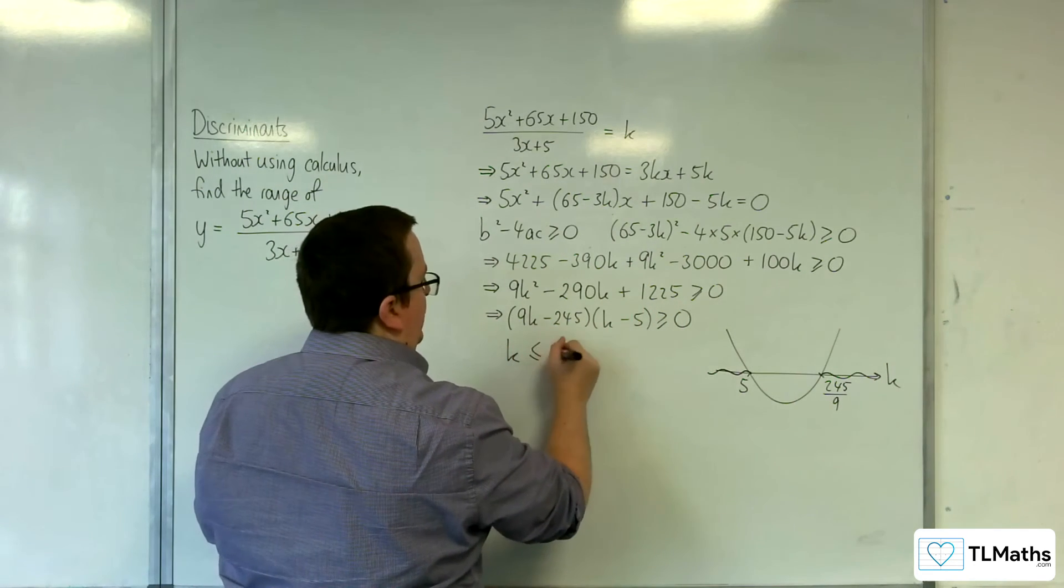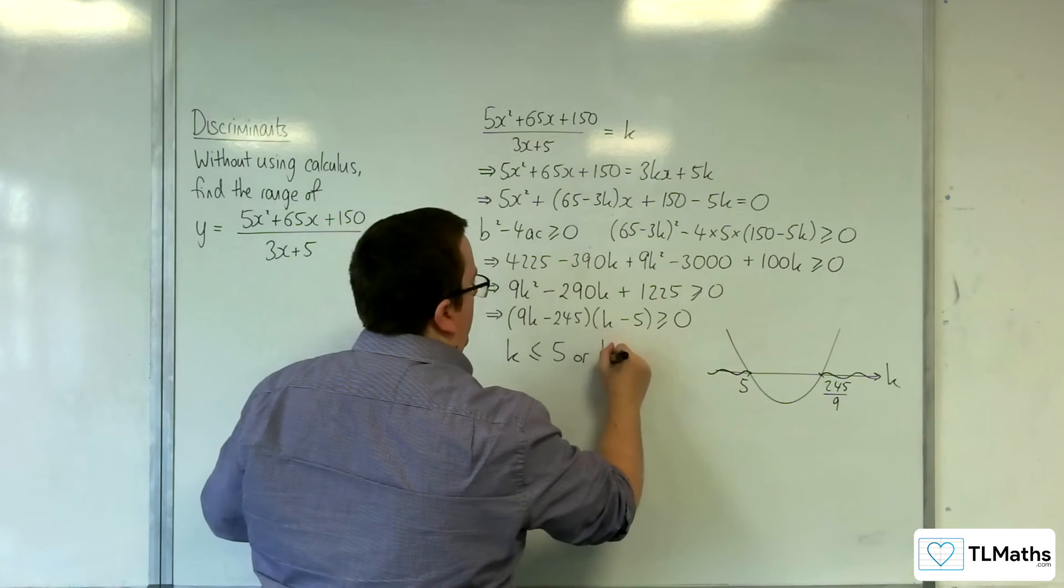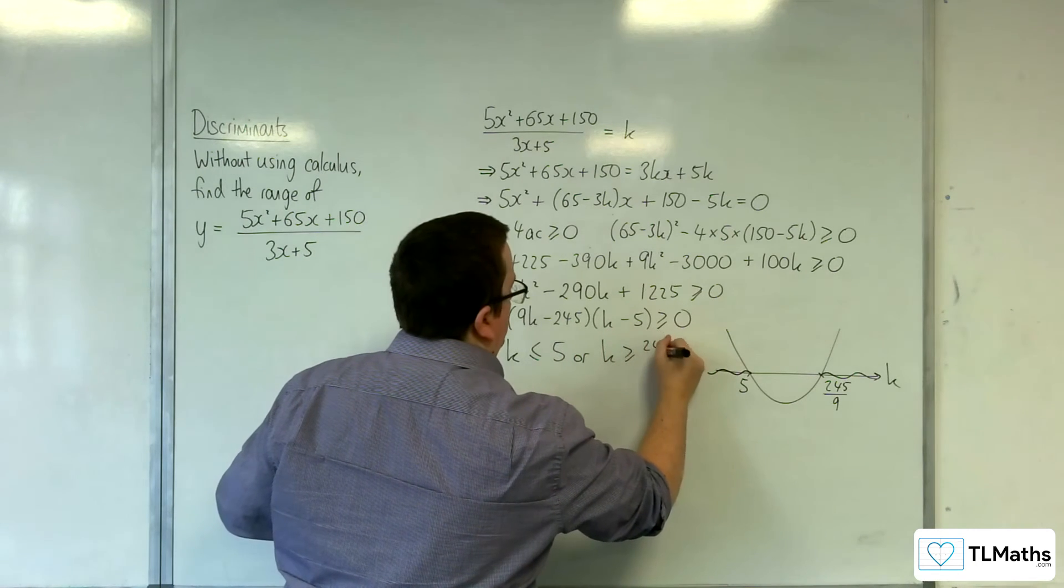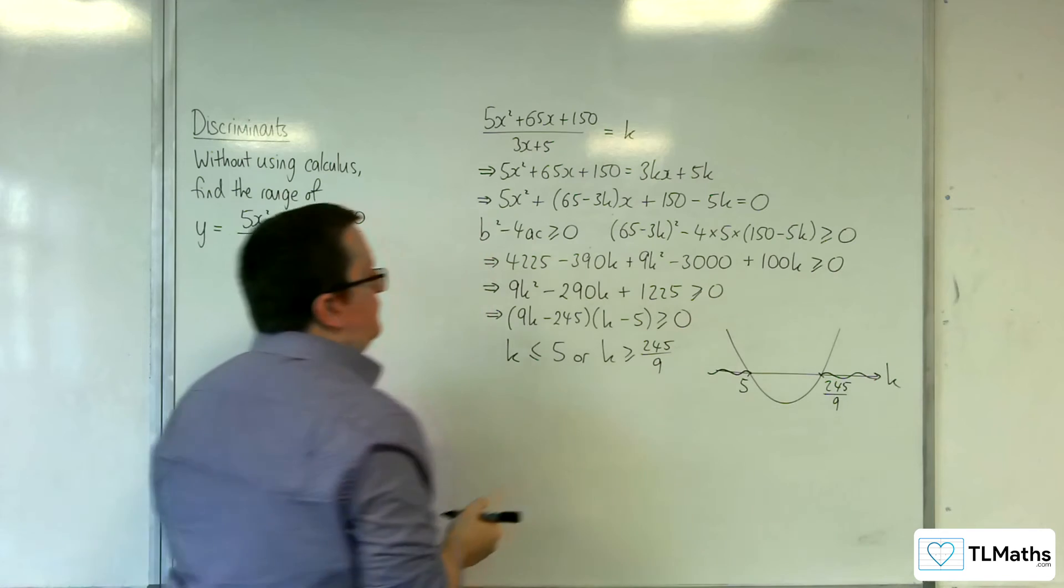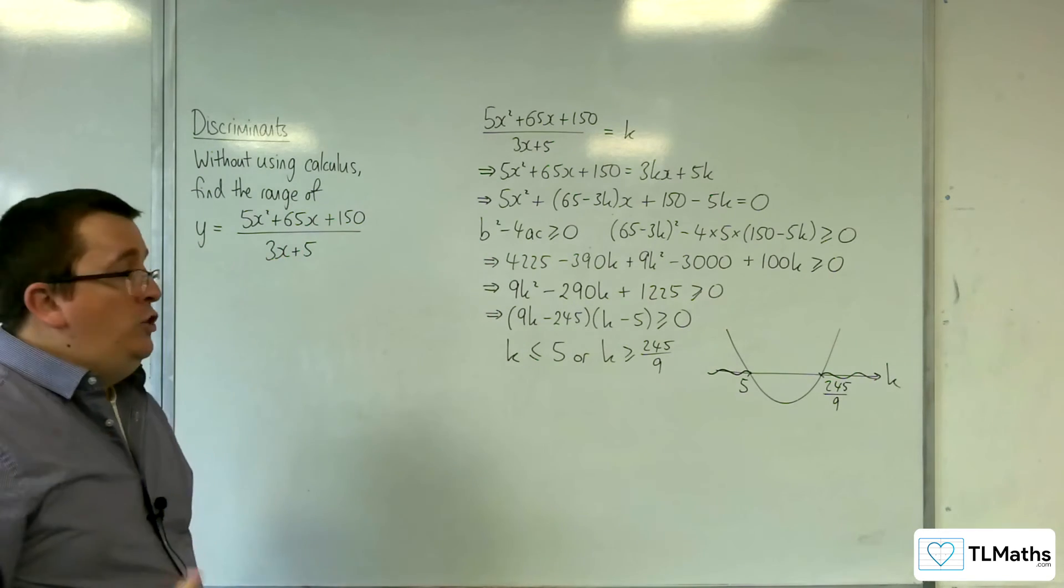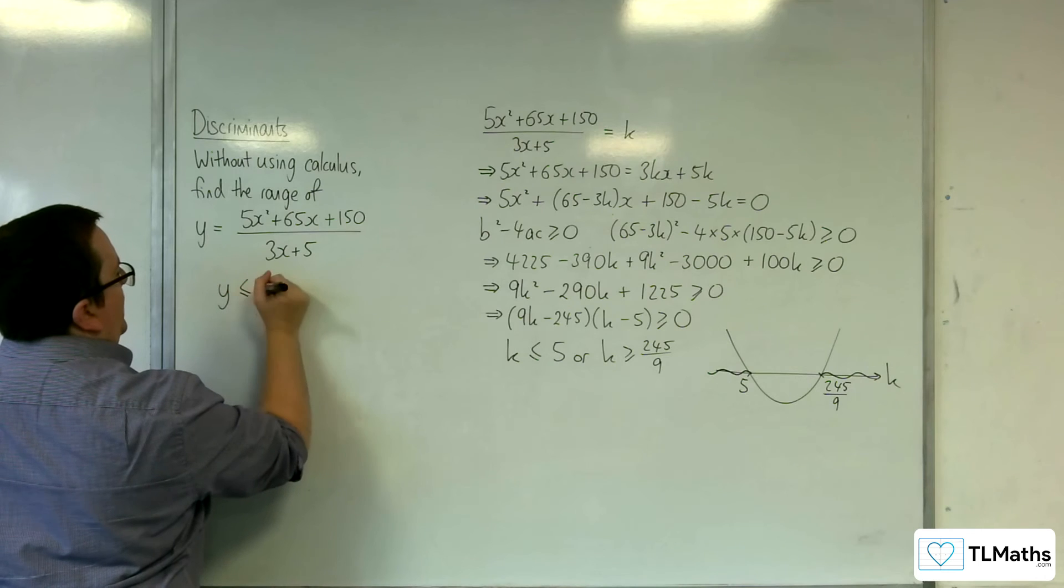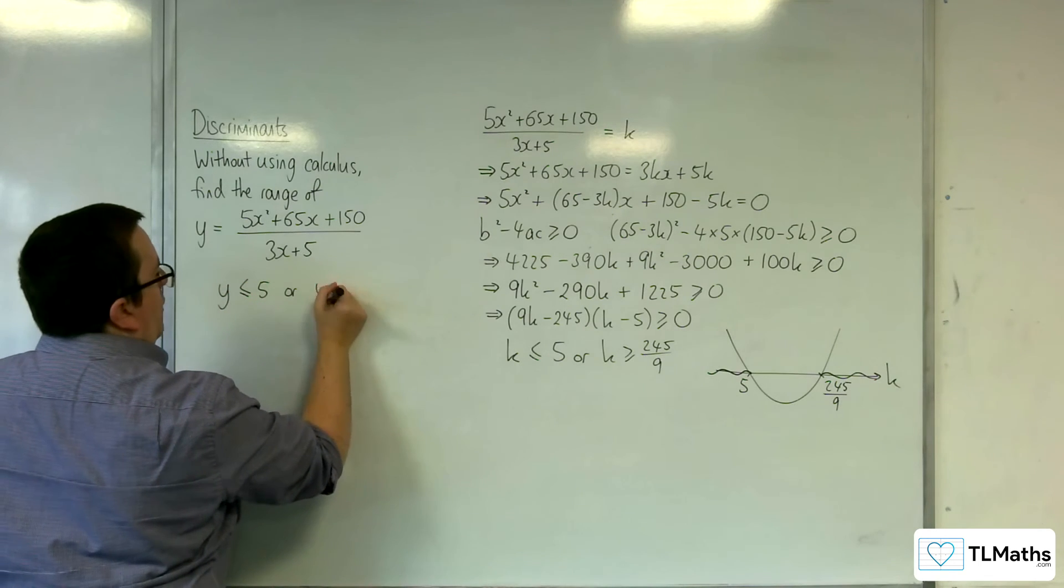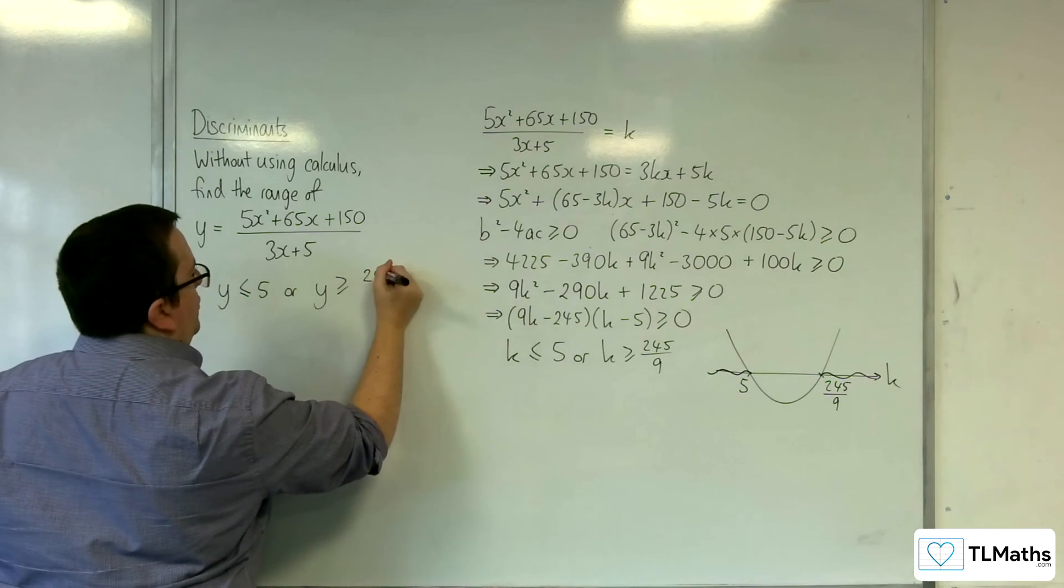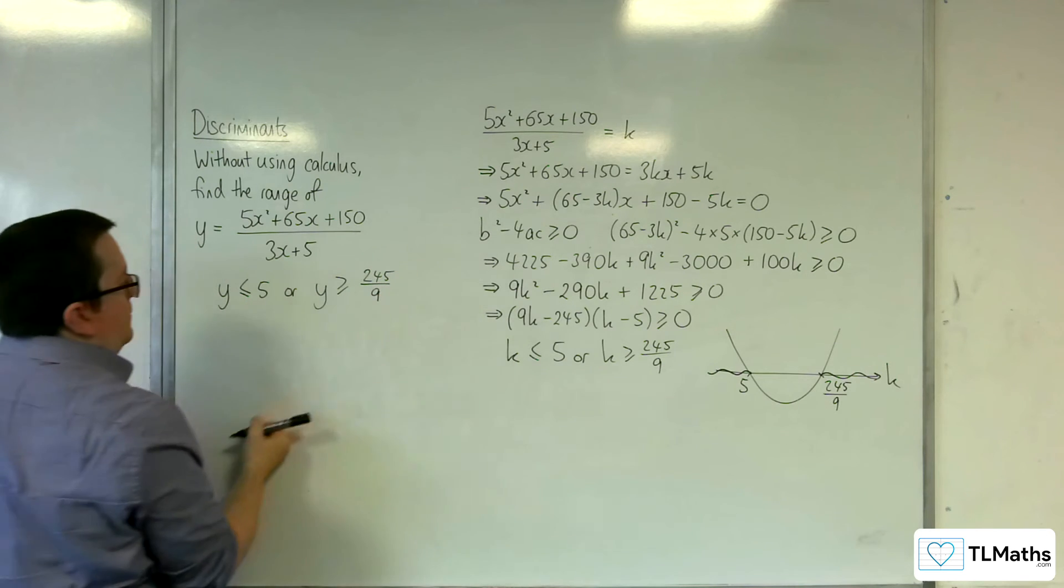So k must be less than or equal to 5, or k is greater than or equal to 245 over 9. So the range of the function would be y is less than or equal to 5, or y is greater than or equal to 245 over 9.